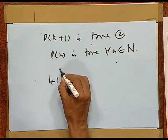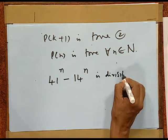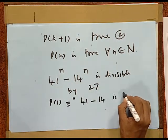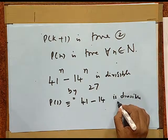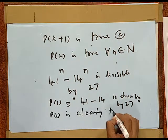We can take one more example in which we have to discuss about divisibility. Suppose we have to prove that 41^n minus 14^n is divisible by 27. As before, first we check the result for n equal to 1. P(1) stands for: 41 minus 14 is divisible by 27, which is obviously true because the number itself is 27. So, P(1) is clearly true.